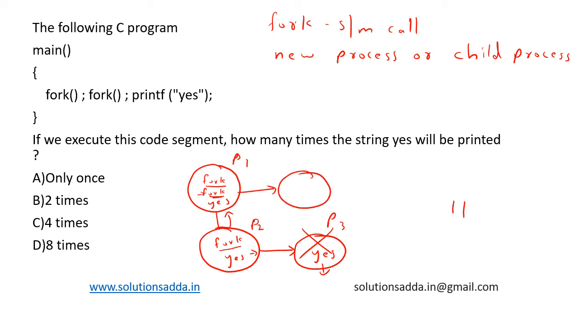So this creates another process P4 with yes here, so one more time this gets executed. Now we go back here and we just print this yes, so one more time is getting executed. So it is four times.